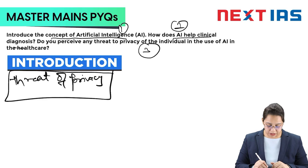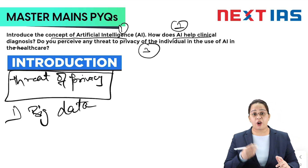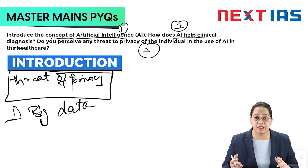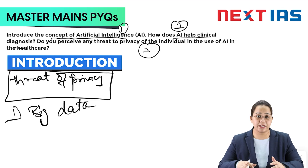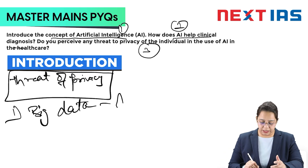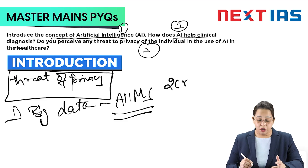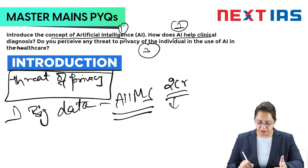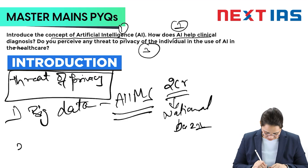The first point under threats is big data. Big data is available with various organizations, websites, and hospitals. We don't know how this data is protected, shared, or consumed — we have never given consent about it and have no idea how the data is being secured. There is always a threat that a data breach can happen. For example, in AIIMS, data of almost two crore people was compromised — it became a national issue.